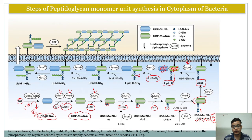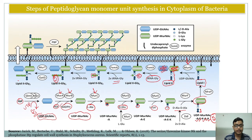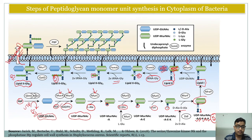After Lipid II is formed, tRNA-glycine comes and attaches to the glutamine amino acid. Additional tRNA-glycine molecules come and attach sequentially, growing the chain longer and longer. Ultimately, a five-residue glycine chain is formed, completing the structure of a single peptidoglycan unit — this is now called Lipid II glycine-5, because five glycine residues are present.